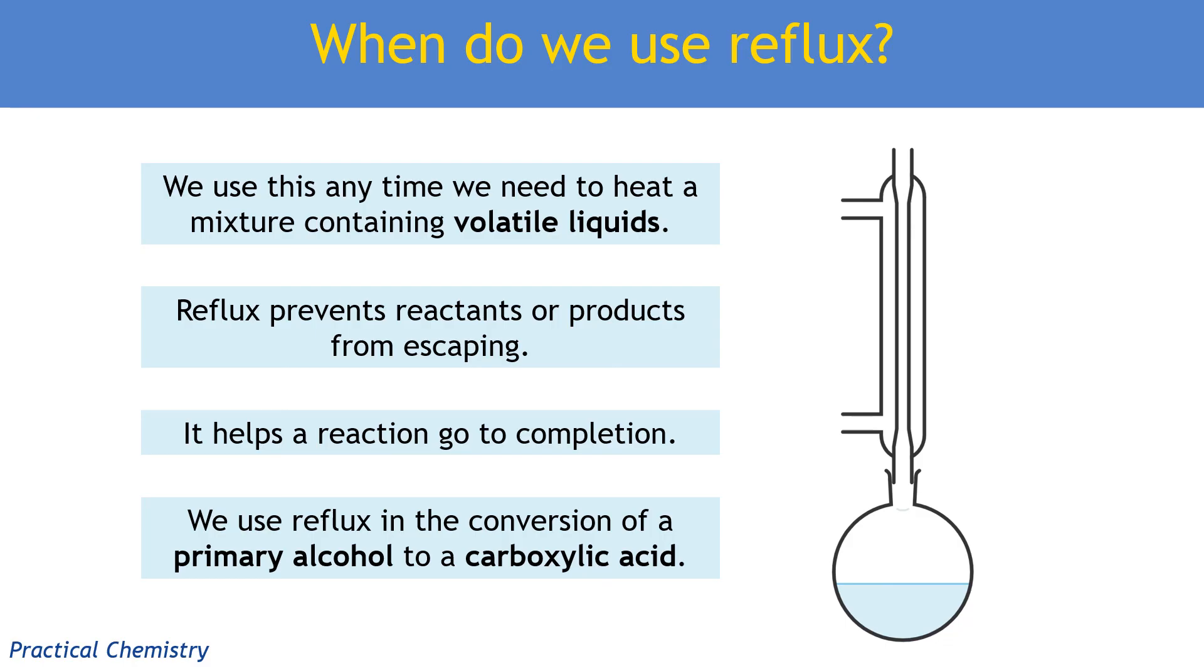We use this if we want to make a carboxylic acid from a primary alcohol instead of the aldehyde. For the aldehyde, we use distillation and the aldehyde immediately left the flask, went into the condenser and was collected. If we want a carboxylic acid, the first stage of oxidation is to make an aldehyde. So when it boils, it's going to go up into the condenser and then it's going to condense, come straight back down. And then it can be oxidised further to make the carboxylic acid.